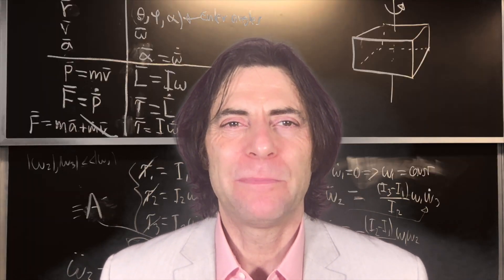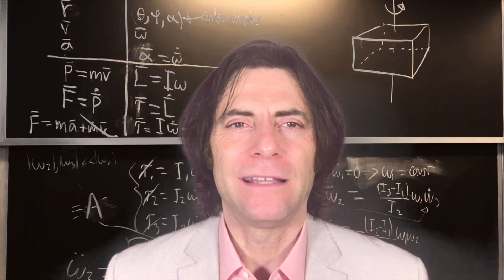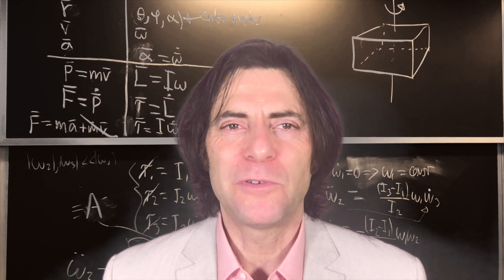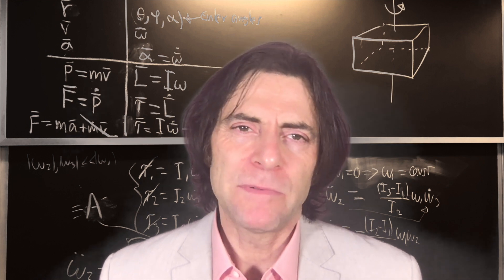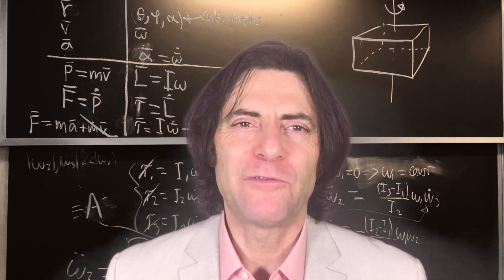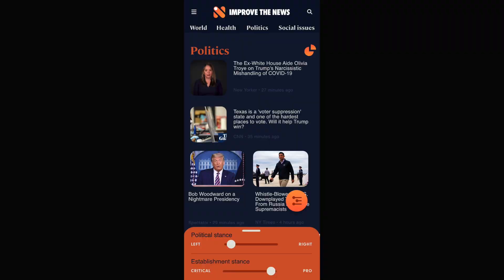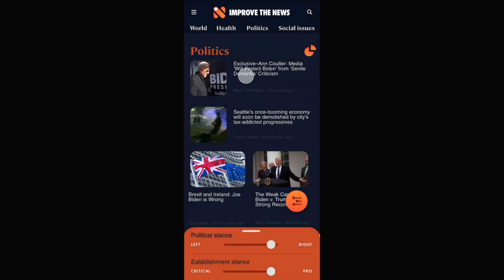That's why democracy needs a free press that challenges authority and lets voters know the truth. Establishment bias is easier to miss than left-right bias because almost all mainstream media have it. Media on the left are great at challenging authorities on the right, and media on the right are great at challenging authorities on the left. But almost no mainstream media are great at challenging things that all big parties agree with. That's why we need the establishment slider.